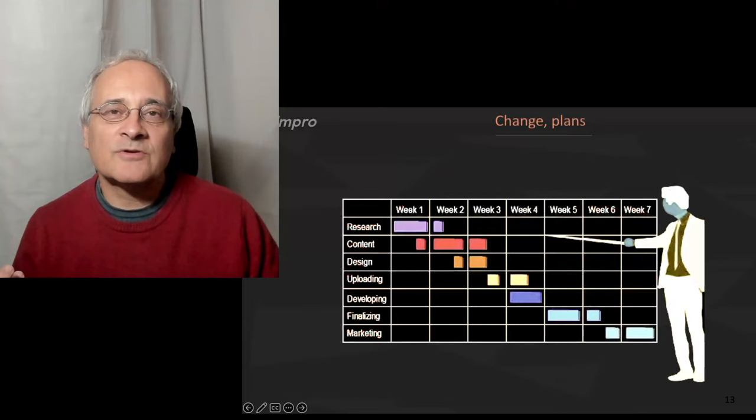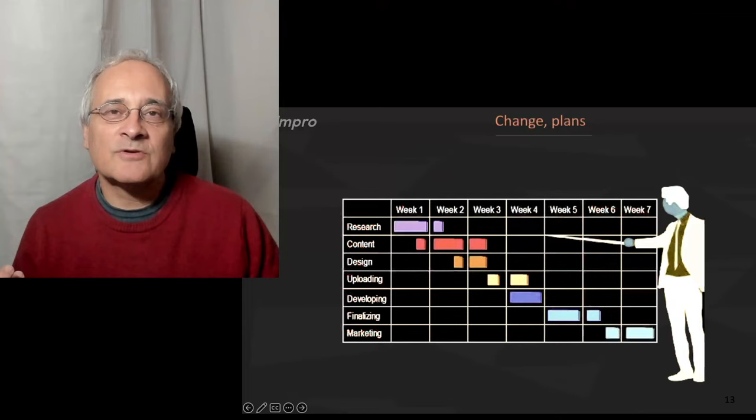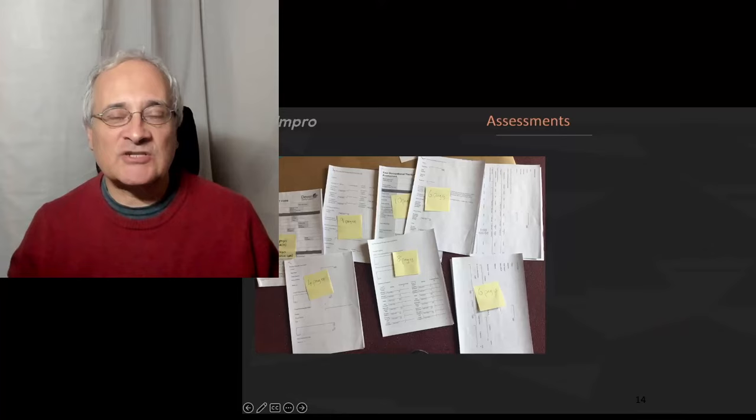So when I go into organizations and I look at what we do, we have the plans, we have rules, assessments, audits, checklists. If we don't have that, then what do we do?